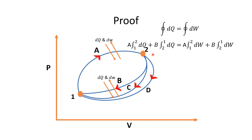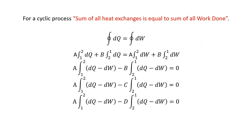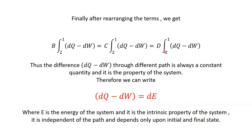We can go from state 1 to state 2 with path A and return via different paths — path B, path C, path D — and the equality holds in all cyclic processes. Rearranging terms: dQ − dW from path A plus dQ − dW from path B equals zero. Doing this for paths B, C, and D, we find that dQ − dW is always a constant quantity regardless of the path, meaning it depends only on the initial and final state. Therefore, it is a property of the system, and we write it as dE.